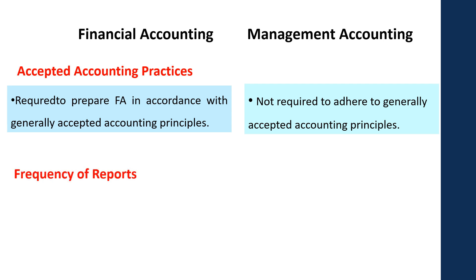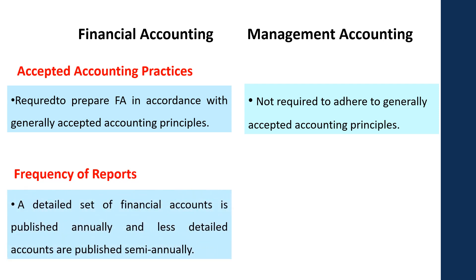Now let's see how the frequency of reports works. According to the Securities Exchange Commission, all public limited companies have to prepare a detailed set of financial accounts and publish them annually, and listed detailed accounts on a semi-annual basis. But when it comes to management accounting, reports must be prepared more frequently because management accounts are prepared to make short-term decisions. Sometimes managers may need management accounting reports monthly, or even more frequent cost analysis reports and break-even charts.